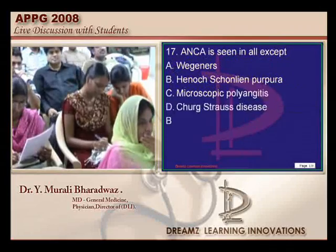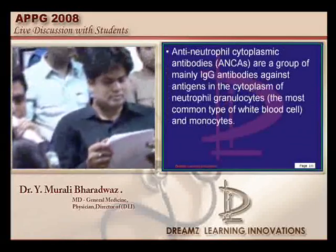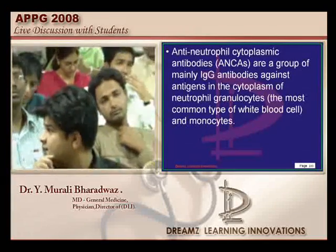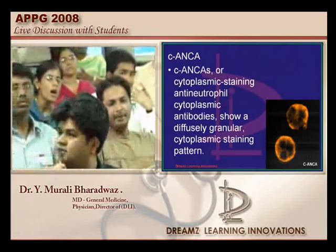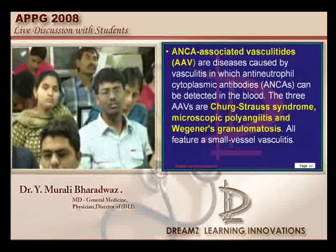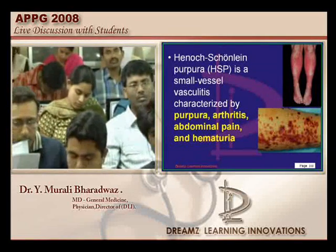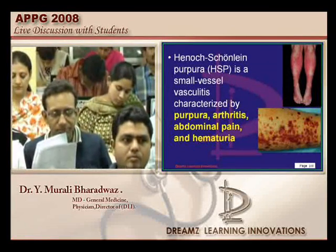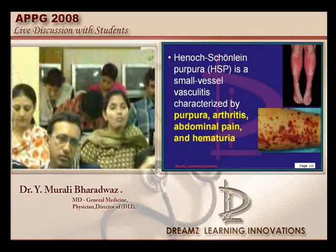ANCA is a very favorite topic of the examiner in rheumatology. ANCA are IgG antibodies against the cytoplasm of neutrophilic granulocytes. You have P-ANCA with a perinuclear staining pattern and C-ANCA with a cytoplasmic staining pattern. The ANCA-associated vasculitides (AAV) include Churg-Strauss syndrome, microscopic polyangiitis, and granulomatosis with polyangiitis — classical examples. Henoch-Schönlein Purpura also leads to vasculitis but is not ANCA-associated; it presents with purpura, arthritis, abdominal pain, and hematuria.